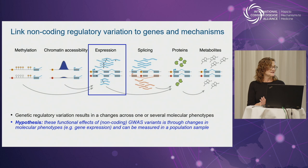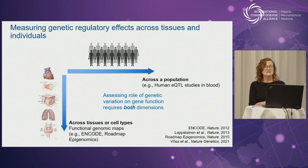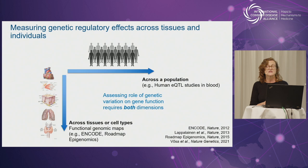The goal of that project when it started was to link non-coding regulatory variation to genes and mechanisms. The hypothesis was that the functional effects of non-coding variants operate through changes in molecular phenotypes, particularly ones like gene expression that we can measure in a population sample. We knew at the outset that we needed to measure this in two dimensions: across tissues and across individuals, because the effects of these regulatory variants differ in different tissues and cell types.